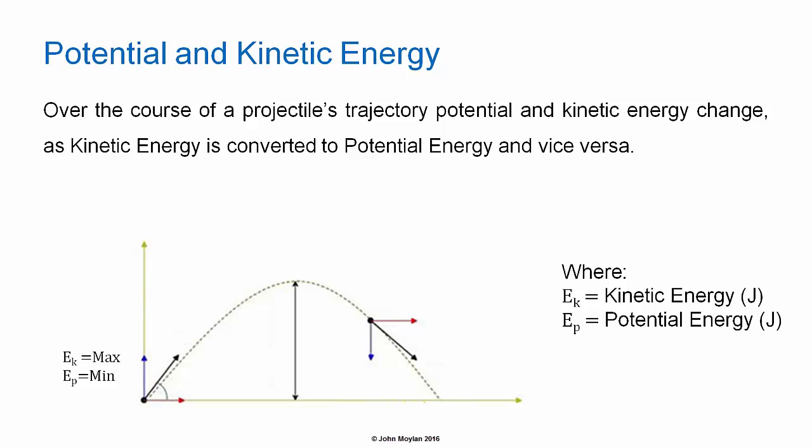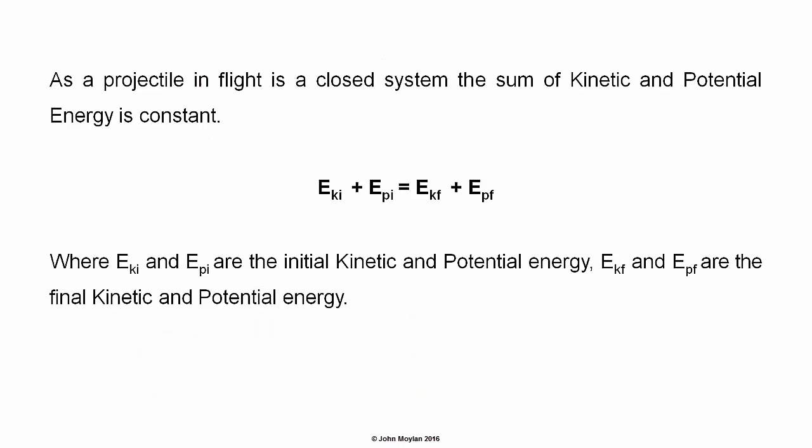For a projectile with a trajectory as illustrated, when first launched, the kinetic energy will be at a maximum, and the potential energy will be at a minimum. As the projectile rises towards the top of its trajectory, the kinetic energy decreases and the potential energy increases, then the potential energy decreases as it is converted back into kinetic energy. As a projectile in flight is a closed system, the sum of kinetic energy is constant, so the sum of the initial kinetic and potential energy is equal to the sum of the final kinetic and potential energy.